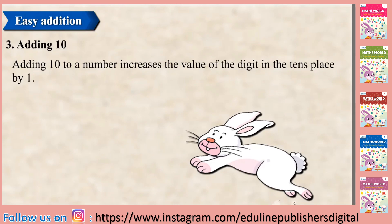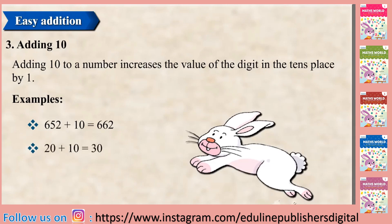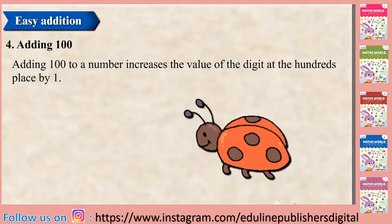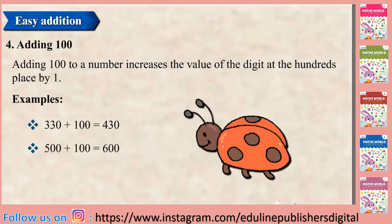Adding 10: Adding 10 to a number increases the value of the digit in the 10's place by 1. Examples: 50 plus 10 is equal to 60; 652 plus 10 is equal to 662.